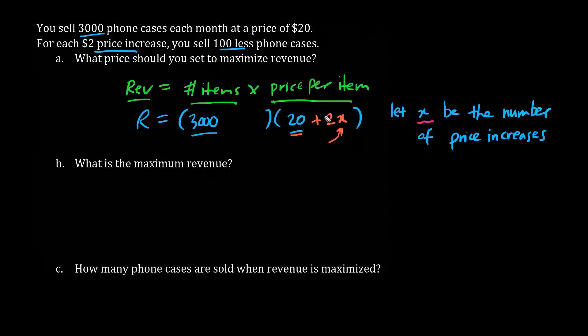When x is 2, we have 2 price increases or 2 times 2, which is $4. 20 plus 4 is $24 per item. So the coefficient of x is the actual amount of the price increase. Similarly, we have 3,000 minus 100x.